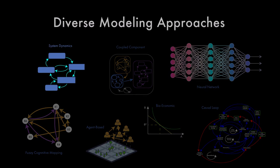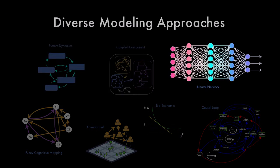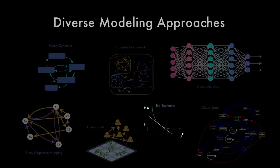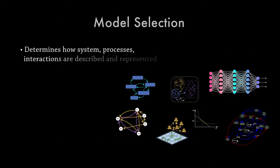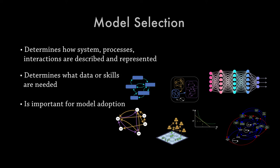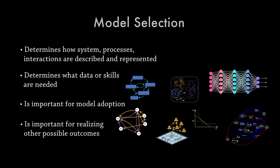Each approach has a different set of modelling features and technical requirements that makes it more suitable for some problems in context and less so for others. Model selection is a critical decision as it determines how the system and its processes, interactions and characteristics are described and represented in the model, as well as what data or skills are needed to build the model. Selecting the right approach is also important for ensuring that the model is adopted and used as intended by the end user, and also when modelling is used to enhance social learning, develop shared understanding amongst stakeholders or a joint commitment to action.